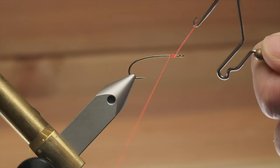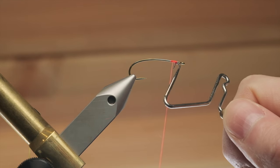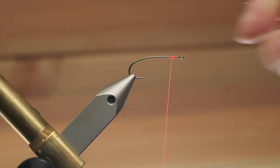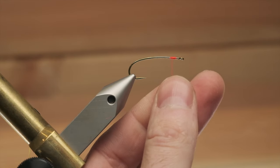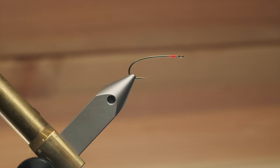I'll release the thread from the indent and gradually pull down. When I hit the shank of the hook, I'll release the hook, tighten, trim away. I have a perfect whip finish.